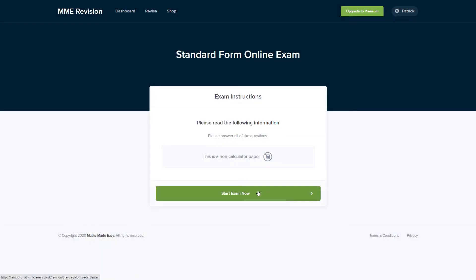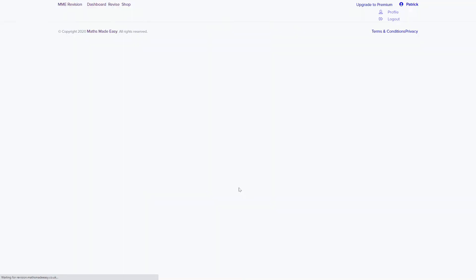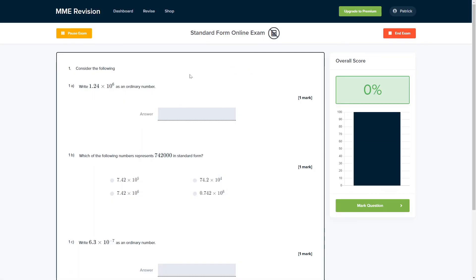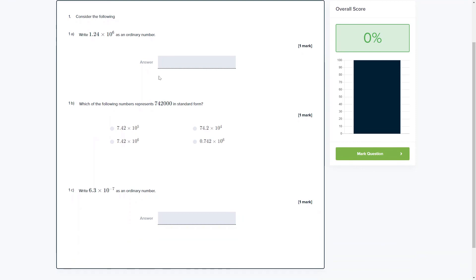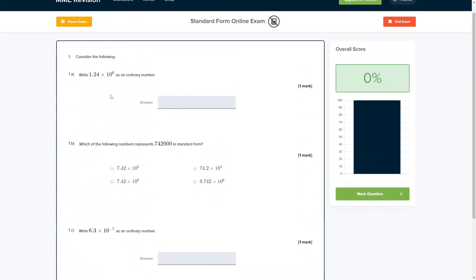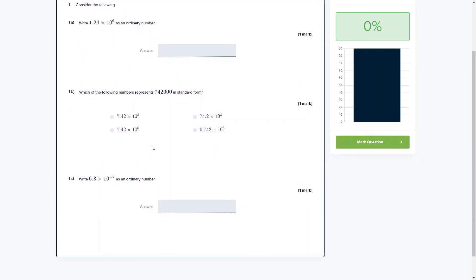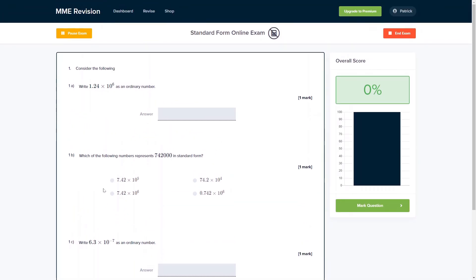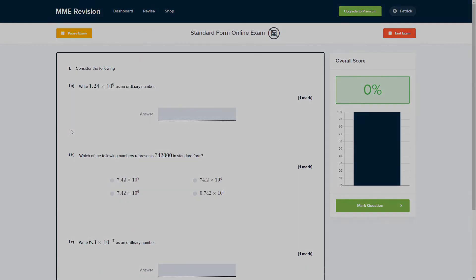Standard form is an important skill, so it's important that you get a lot of practice. You can do so with our online exam, available through our revision platform. You'll find loads of different question types and get instant feedback on each one. It's a good way of tracking where you're going wrong, what your strengths and weaknesses are, and how you can improve. If you're interested, click the link below.